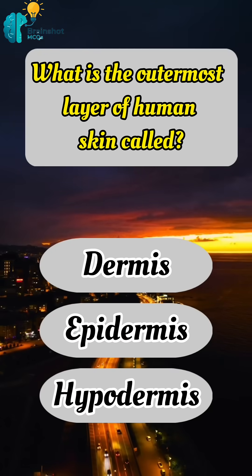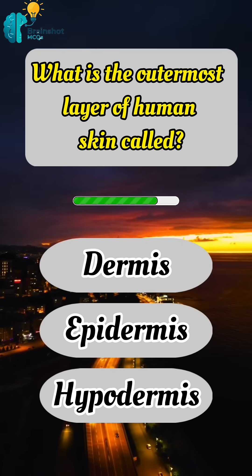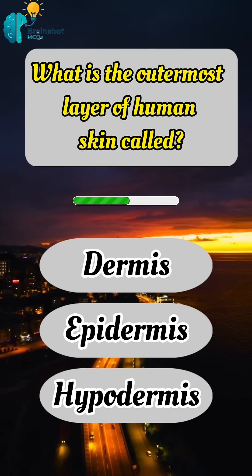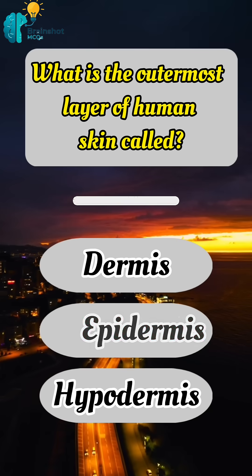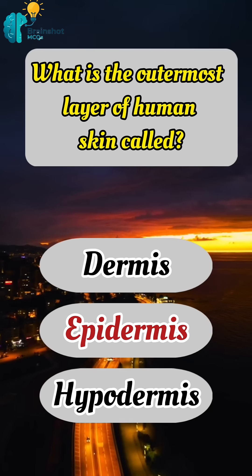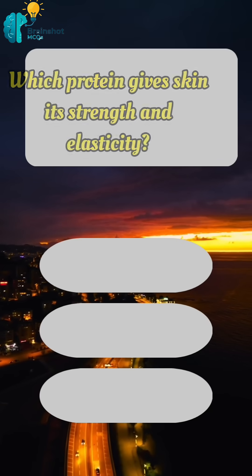What is the outermost layer of human skin called? Correct answer: B. Epidermis.